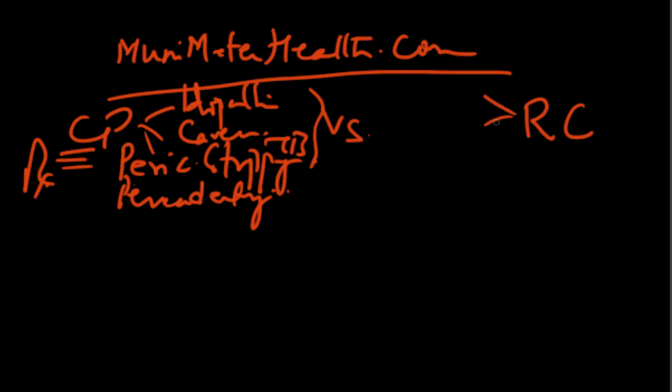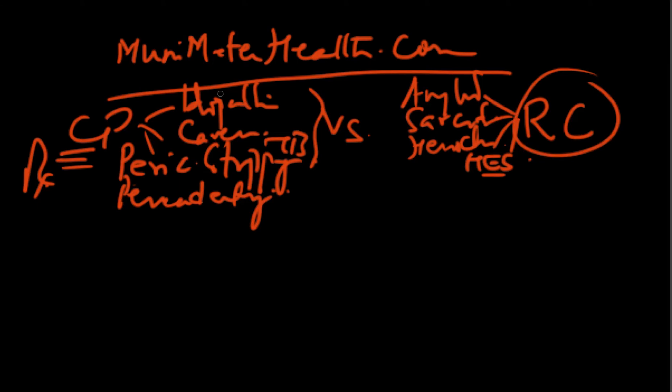Restrictive cardiomyopathy could be of three or four causes. One is amyloid, sarcoid, it could be hemochromatosis where there is tremendous iron overload, and then hypereosinophilic syndrome, HES. So these are the three or four important causes of restrictive cardiomyopathy.